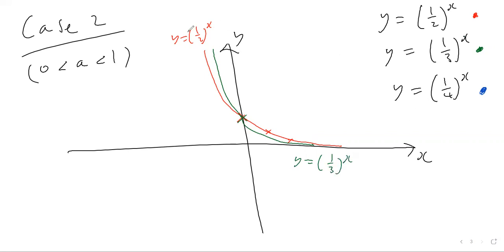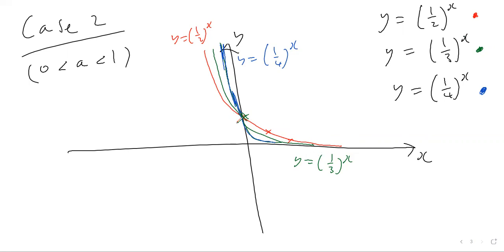And this last one — y equals one quarter to the power of x — has the same kind of shape. It goes through y equals one again, is even steeper than the previous two on the negative side, and shallower than the previous two on the positive side going toward zero. So that's a summary of how you can plot these exponential graphs with values of a between zero and infinity.